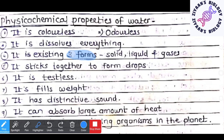Water exists in three forms: solid, liquid, and gas. The solid form is called ice, the liquid form is normal water, and the gaseous form is called water vapor or clouds. Water molecules also stick together to form drops to reduce surface tension — the best shape acquired for this is a sphere.